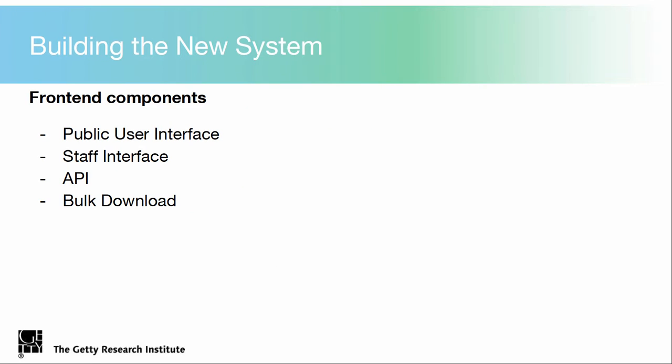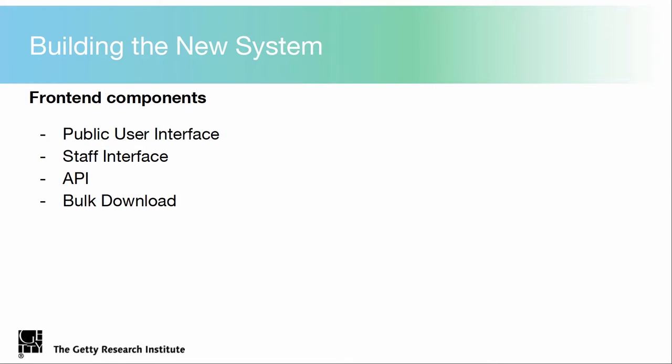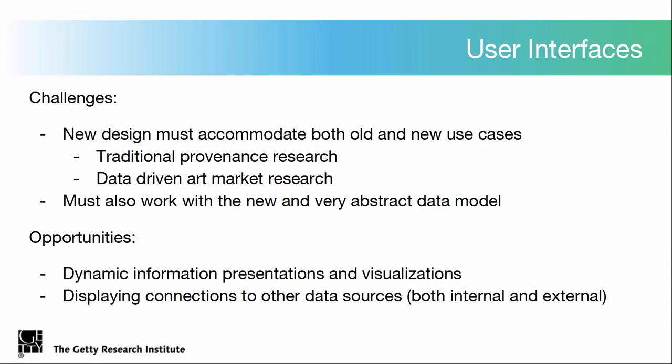Moving on to actually building the new system: there are four main components — the public interface, the staff interface for the staff that enter new data, the API, and also bulk downloads. Bulk download was one of the top requests we had from provenance researchers at a workshop last year, so we're going to try to address that as well. The user interfaces have to accommodate both the traditional use case of looking up a single artwork and finding out where it came from, but also address new use cases of computational research and looking at things in the aggregate.